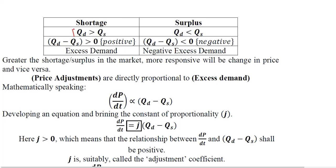Shortage is when quantity demanded is greater than quantity supplied; surplus is when quantity demanded is less than quantity supplied. If we shift quantity supplied to the other side, it appears with a negative sign and we are left with QD minus QS greater than zero. This positive value in the parenthesis is known as excess demand, because QD appears before QS and QS is subtracted from QD.